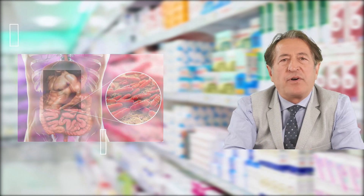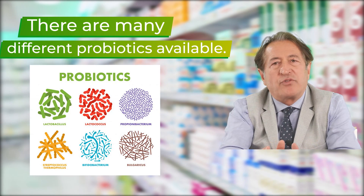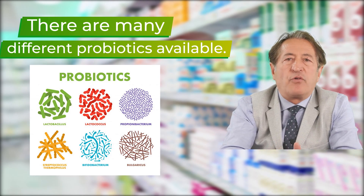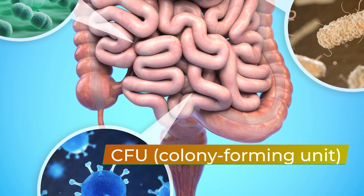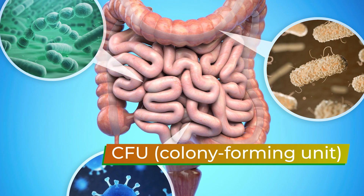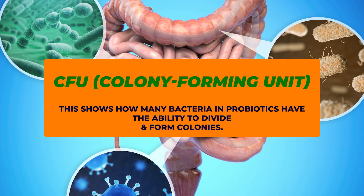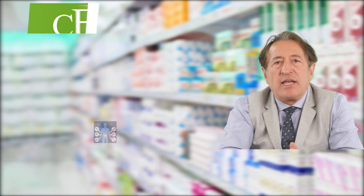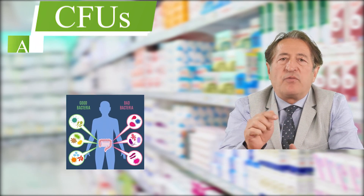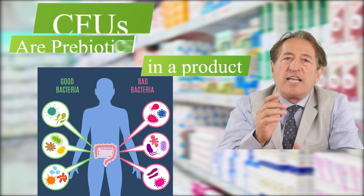There are many different probiotics available. Probiotics differ by their type, the strains found in probiotics, and the number of CFU — colony forming units. CFUs show how many bacteria in probiotics have the ability to divide and form colonies. In other words, CFUs are the number of viable bacteria in a product whose proliferation has been confirmed.